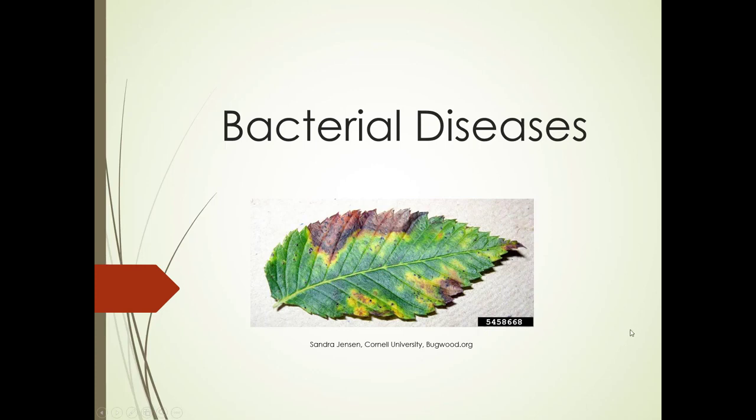We're going back to diseases — this is bacterial diseases. This particular disease is on elms, which you may have come across a lot of issues on. They do tend to have problems. This is bacterial leaf scorch, which is a bacterial disease.